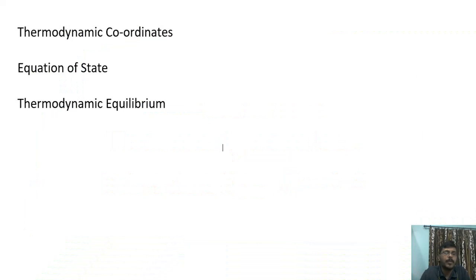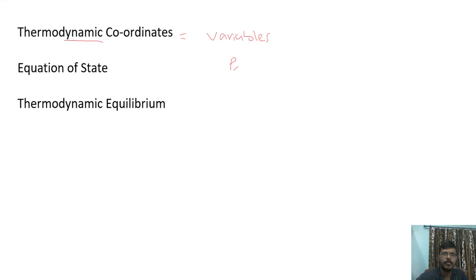We are going to discuss thermodynamic coordinates, equation of state, and thermodynamic equilibrium. Thermodynamic coordinates are also called thermodynamic variables. The variables pressure, volume, temperature, internal energy, and number of moles in the system are our thermodynamic variables. These are the variables which describe the state of a system.